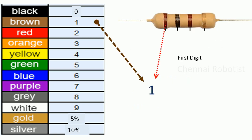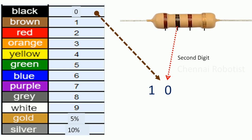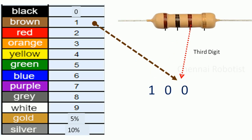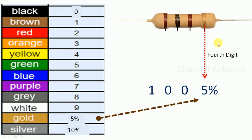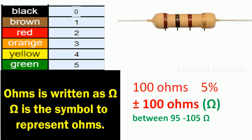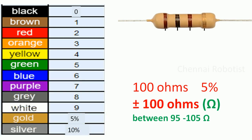Let's work through an exercise. The first color is brown, which is 1. The second color is black, which is 0. The third color is brown, which is 1 — meaning we add one zero. So we get 100. The fourth color is gold — 5% tolerance. The resistor value is 100 ohms, with a tolerance range of 95 to 105 ohms.